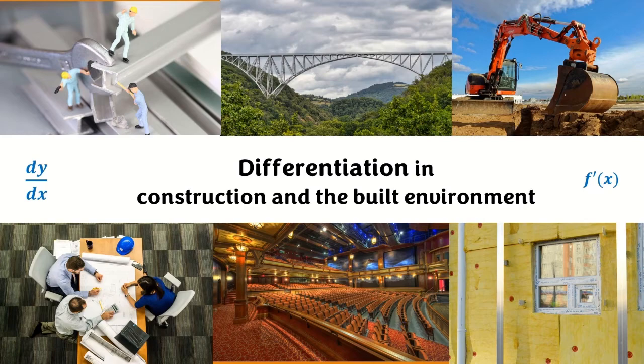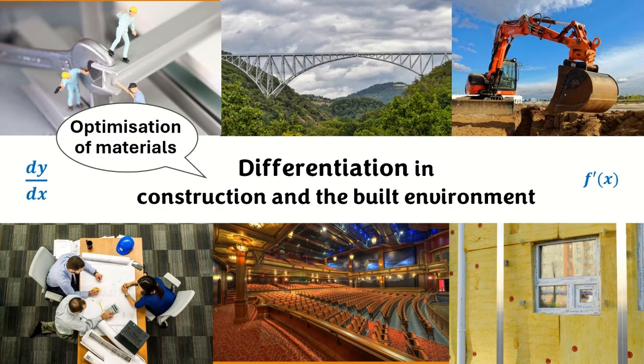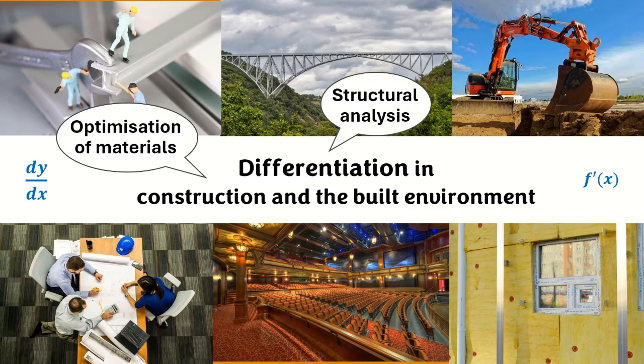Now we are going to see how differentiation plays a crucial role in various aspects of construction. Here we have some examples. Optimization of materials and design: differential calculus helps in finding optimal dimensions and shapes that minimize material costs but also meeting structural and safety requirements. Structural analysis: engineers use differentiation to analyze the stresses and strains within structures. By differentiating equations of loading conditions, they can determine critical points that may need to be reinforced.